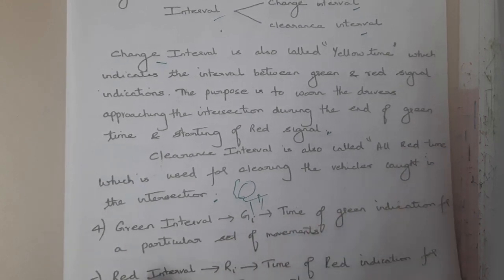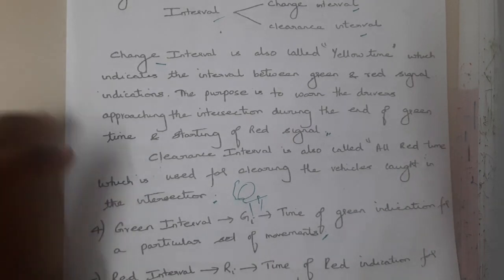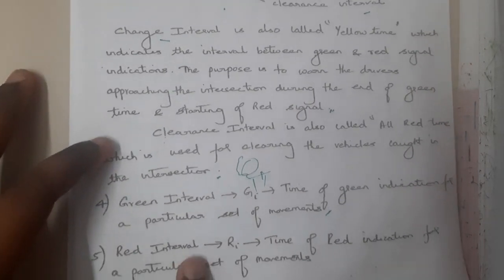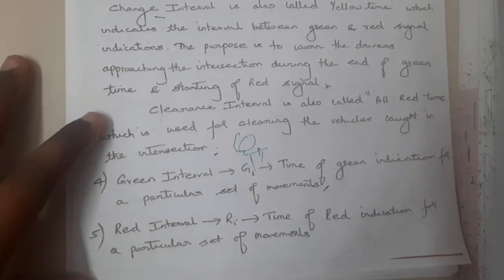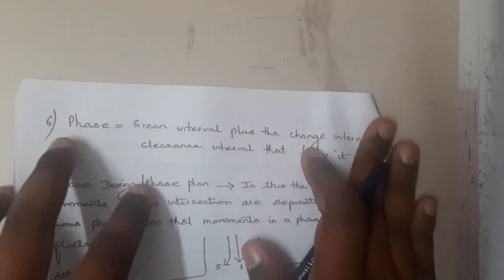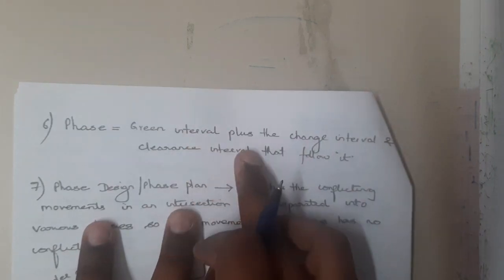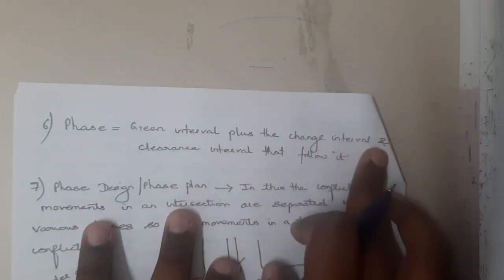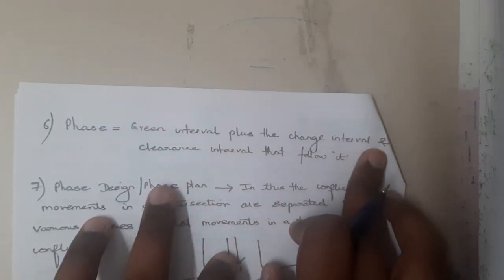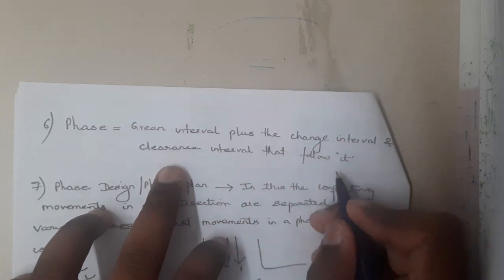Green interval is represented as 'gi' — the time of the green indicator at a particular moment. Red interval is represented as 'ri'. Continuing to phase: phase is green interval plus the change interval and clearance interval.